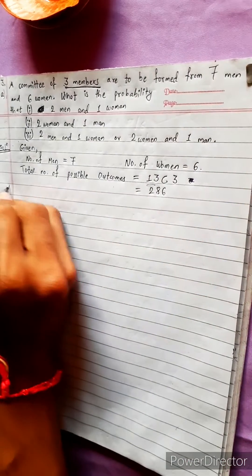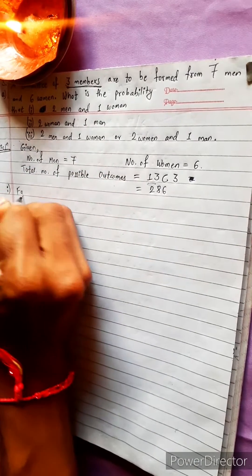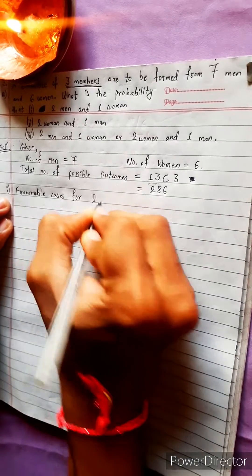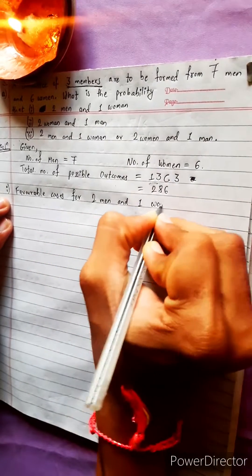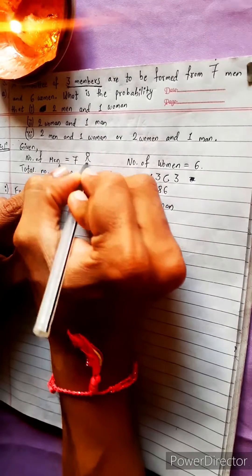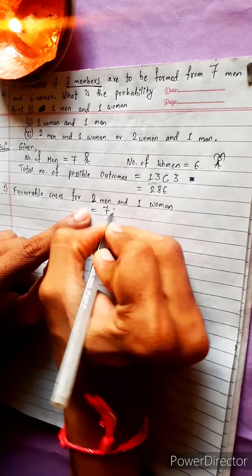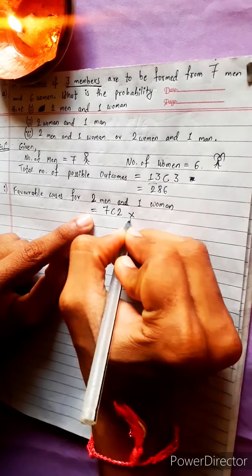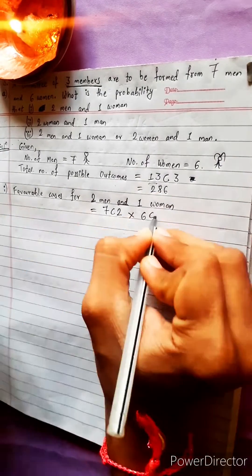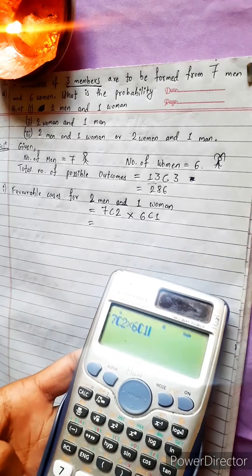Now let's start with case one: two men and one woman. The favorable cases for two men and one woman equals 7C2 multiplied by 6C1, because we choose two from seven men and one from six women. 'And' means multiply. This equals 126.